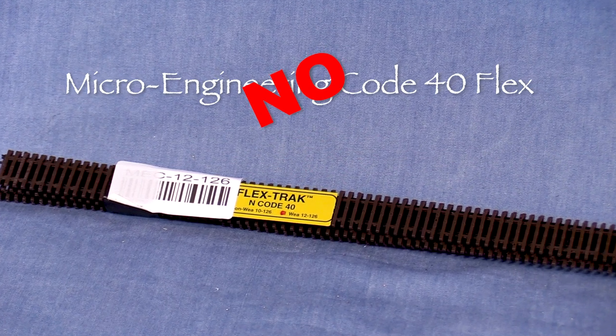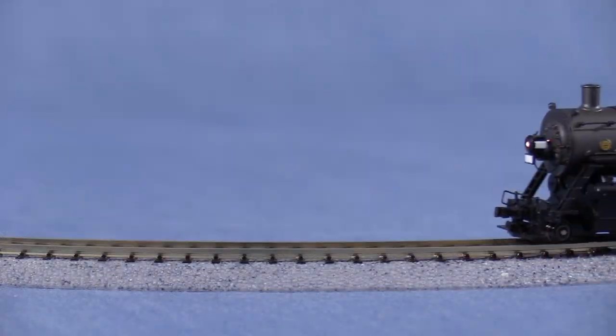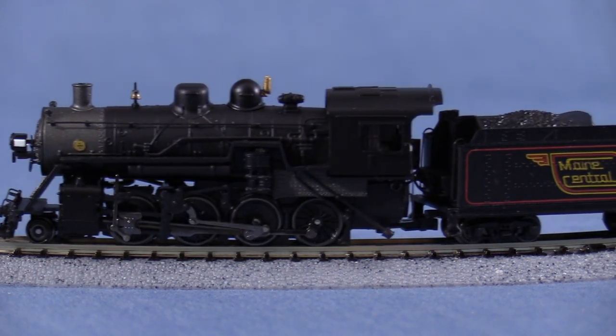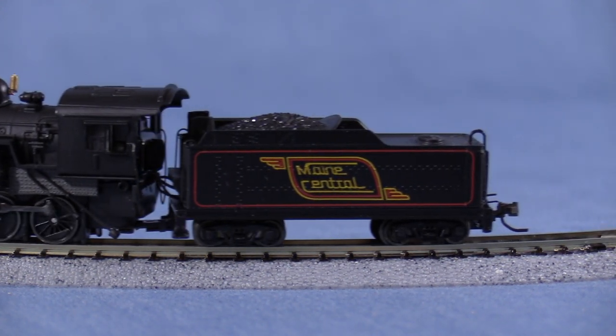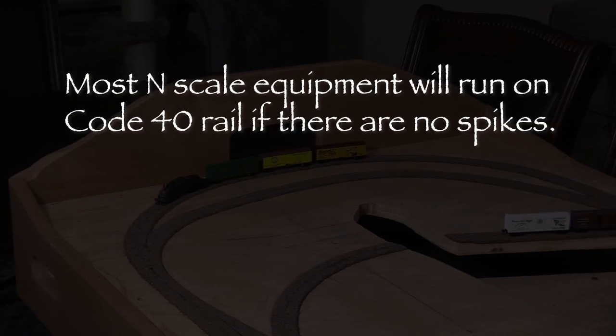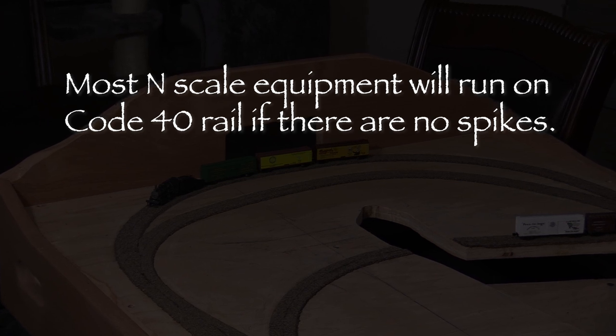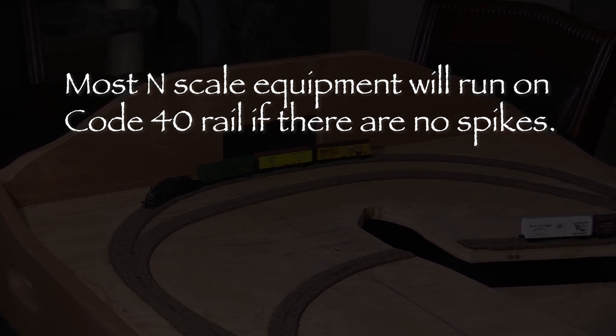I'd originally considered using some Micro Engineering Code 40 flex track for the standard gauge only portions of the layout, but I found that the spike head detail caused issues with some of my equipment. Most of my models have the newer lower profile flanges, but there are a couple older locomotives that I want to run on this layout that have deeper flanges. Past experience has taught me that Code 40 rail without spikes will work with most N-scale equipment, even older stuff with deeper pizza cutter flanges.